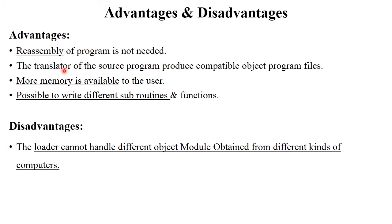The advantages of the general loader are: reassembly of the program is not needed; the translator produces compatible object program files; more memory is available to the user since the loader is smaller; and it is possible to write different subroutines and functions separately. The disadvantages are: it cannot handle object modules obtained from different computers; it is used only for a specific language; and it cannot perform on multiple modules — only basic modules.